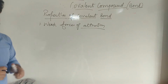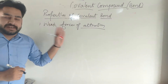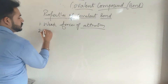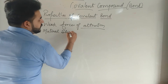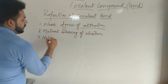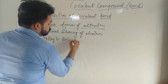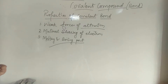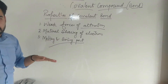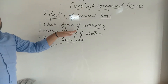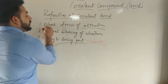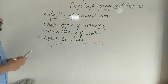Properties of covalent bonds: First, in covalent bonds only sharing of electrons takes place, not a complete transfer. So only weak forces of attraction exist between the particles. Second, mutual sharing of electrons occurs. Third, the melting and boiling point of covalent compounds is lower because they are formed with the help of weak forces of attraction, requiring less temperature to break those forces.